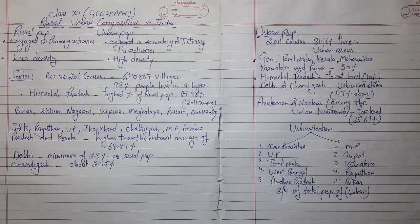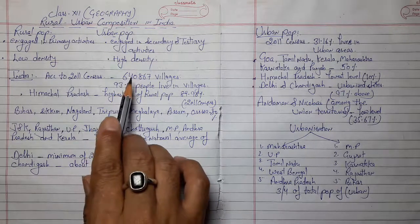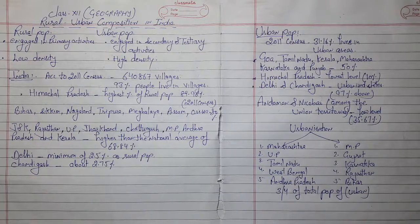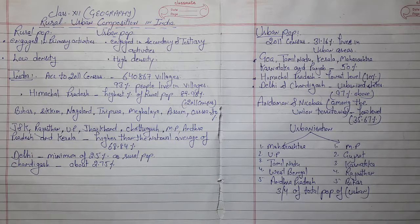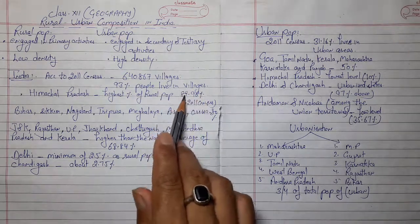India is known as a country of villages. According to the 2011 census, India has six lakh forty thousand eight hundred sixty-seven villages. It has the highest percentage of rural population. According to the 2011 census, 68.84 percent of India's total population lives in villages.